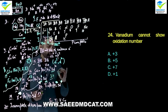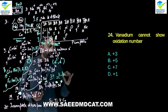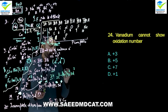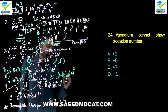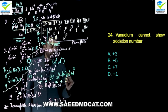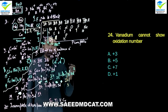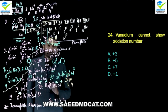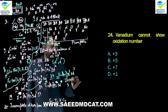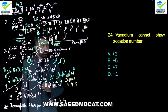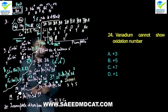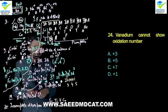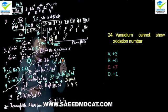Question 24: Vanadium cannot show which oxidation number? Vanadium (atomic number 23) has configuration [Ar] 4s2 3d3. It can show +2 (from s electrons), +3 (s + 1 unpaired d), +4 (s + 2 unpaired d), and +5 (s + 3 unpaired d). So vanadium can show +2, +3, +4, +5 — but not +7. The fourth option (+7) cannot be shown by vanadium.